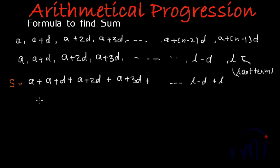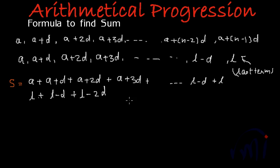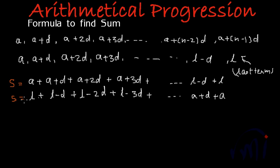If I write this series in opposite order, nothing is going to change — the sum remains the same and only the order of the terms changes. Writing in opposite order, I have to write L first, then L minus D, then L minus 2D, then L minus 3D. This will be the series in descending order, continuing until the last term becomes the first term A, and the second-to-last term is A plus D. This will also be equal to S because we have just changed the order of writing.